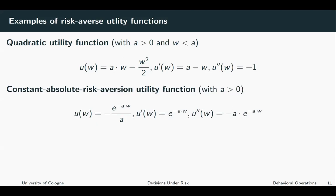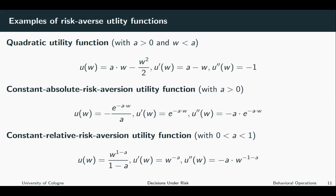Finally, let us also look at constant relative risk aversion utility functions — so-called CRRA utility functions. They are given by the class of utility functions where utility equals wealth to the power of 1 minus a, over 1 minus a. If you take the first derivative, you see this expression is positive. Taking the second derivative gives a negative result.